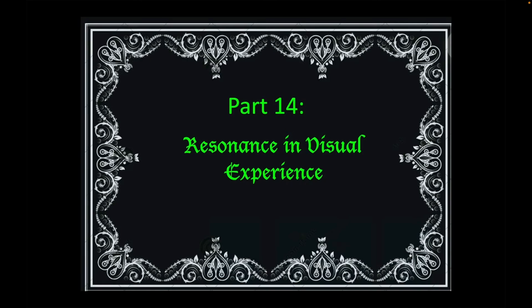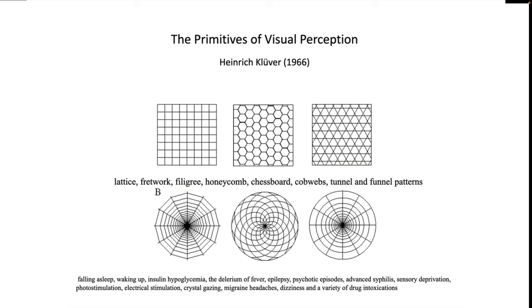Part 14: Resonance in Visual Experience. In 1966, Heinrich Kluver performed an experiment where he gave subjects LSD, had them relax in a dark space, and record the experience that they had. The subjects reported seeing lattice, fretwork, filigree, honeycomb, chessboard, cobwebs, tunnel, and funnel patterns appearing spontaneously in their experience.